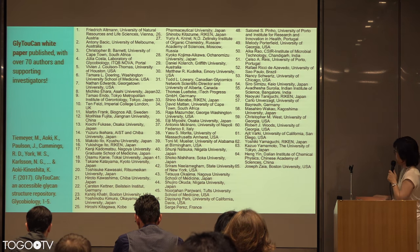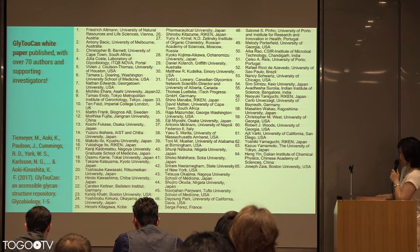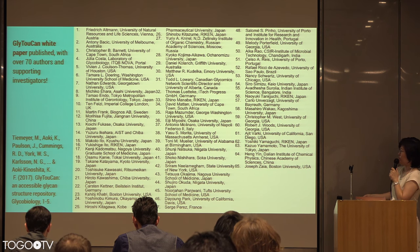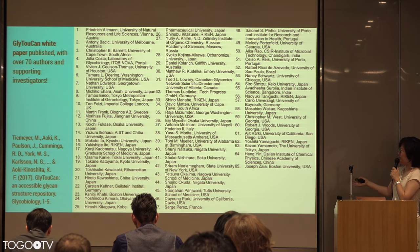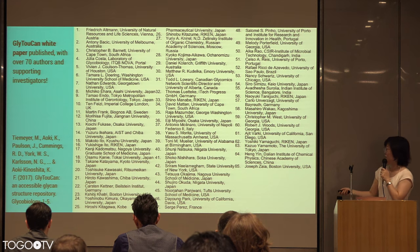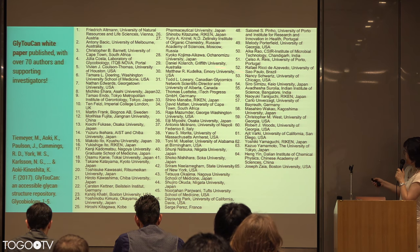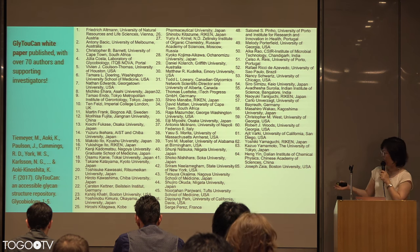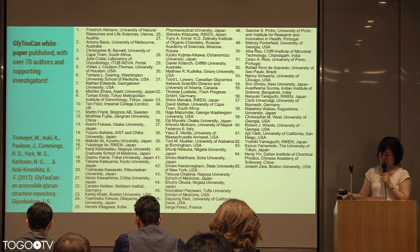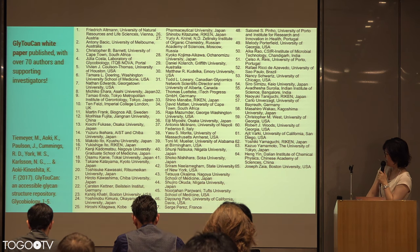This year, we also published a white paper that proposes that GlyTouCan be an official repository for glycans. We have over 70 authors from around the world who support GlyTouCan as the major main repository to use to get glycan IDs.